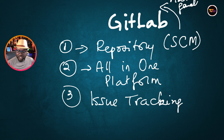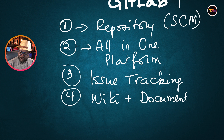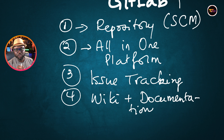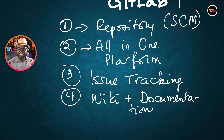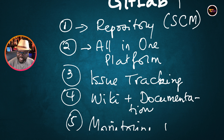Number four, which is very important and which you don't have on GitHub, is wiki and documentation. When you think of wiki, you're looking at a feature that allows you to create a knowledge base — a place where people can go to learn about your application lifecycle, systems lifecycle, or anything you want to share knowledge about. There's also monitoring and analytics.